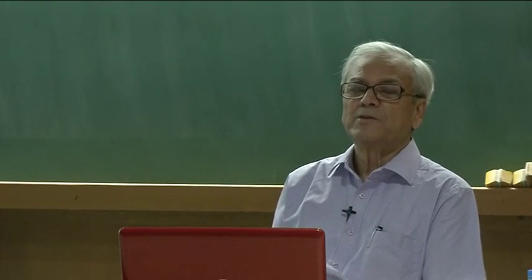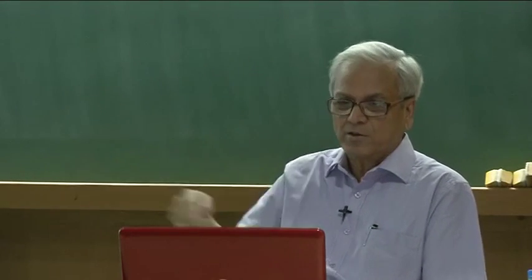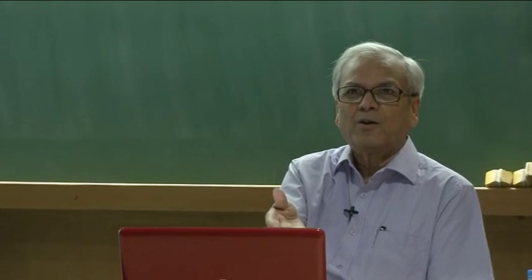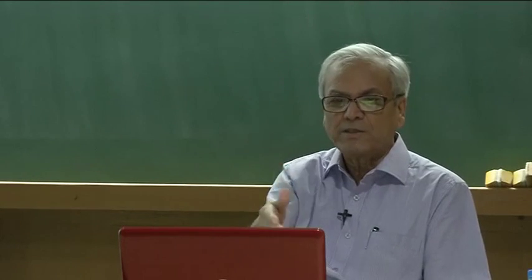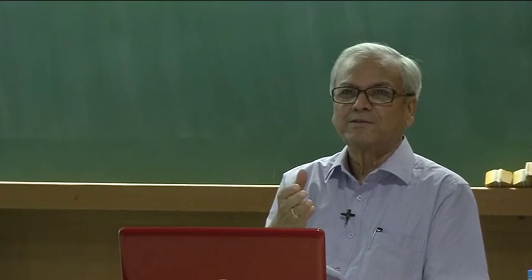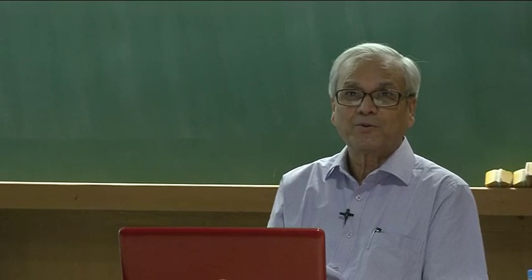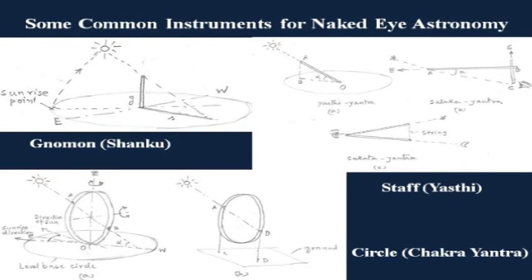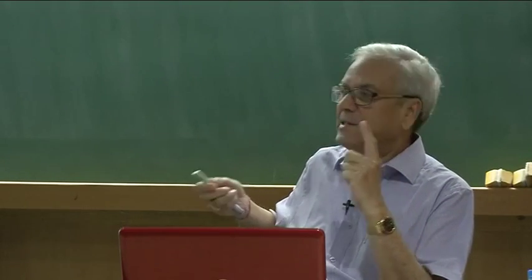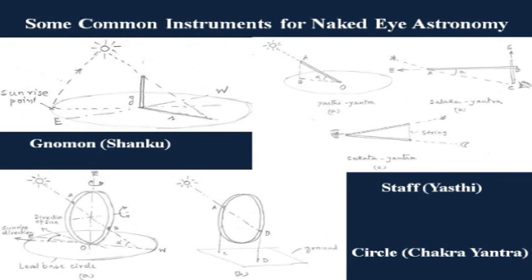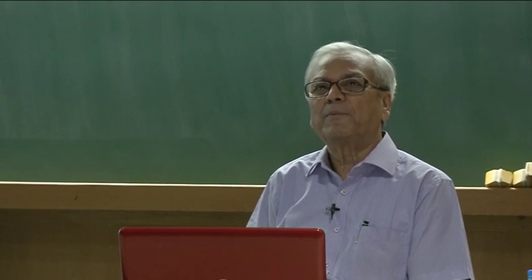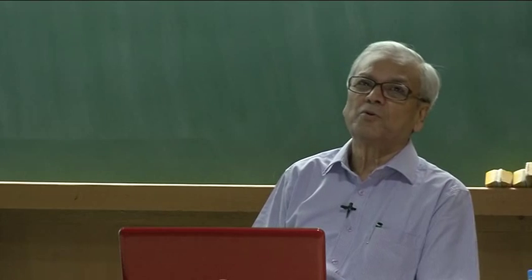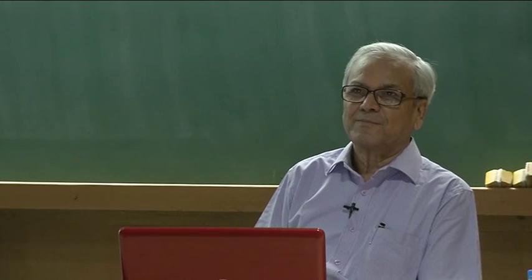In those days, common instruments used from ancient times included the mona or shanku — a stick placed at right angles to the horizontal whose shadow is used for different purposes. For example, if you are asked to find out the true north and true east, you can easily do it with this. You draw a circle, and at sunrise after some time you take the shadow — in such a manner that the length of the shadow is the same. You draw a circle and whenever the shadow tip touches that circle, you take two such shadow points and bisect them — in the northern hemisphere it will show the northern direction, with the perpendicular giving east-west.